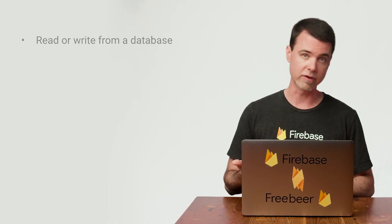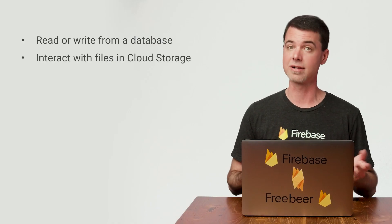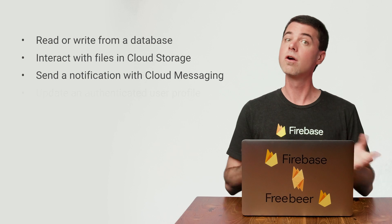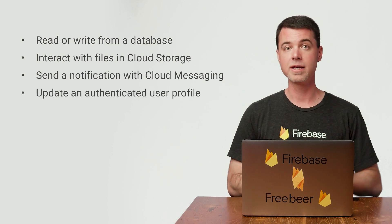Many JavaScript APIs you're going to use will return a promise when you call a function to perform some work. In particular, the Firebase Admin SDK will return a promise when you ask it to do things such as read or write from a database, interact with files and cloud storage, send a notification with cloud messaging, or update an authenticated user profile. Any API that returns a promise will do so immediately before the work is complete. This is very important to remember, because you need to use this promise to figure out when the work is done.